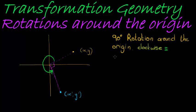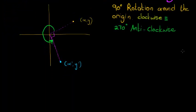The 90° clockwise and 270° anti-clockwise rotations are exactly the same thing, so the transformation rule would be the same. I'm going to draw a right-angle triangle here and call that angle theta. The opposite side of theta is this height y — the y value of the coordinate — and the adjacent side along the x-axis is x.